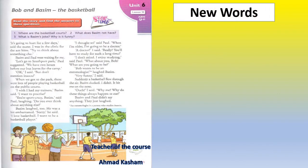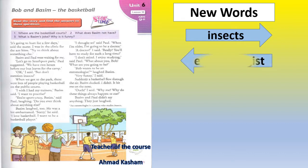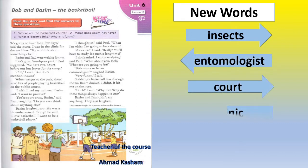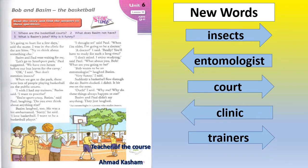The first thing I'm going to do is teach you the new vocabularies or new words we will learn from this story. What do we have? We have: insects, entomologists, court, clinic, and trainers. I will teach you these vocabularies and explain them with photos.